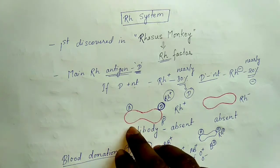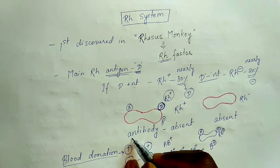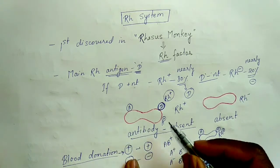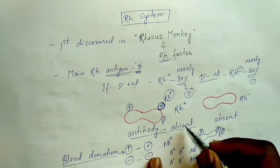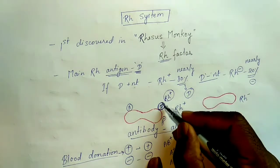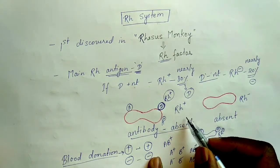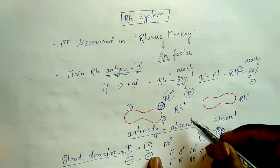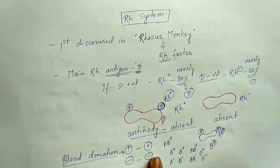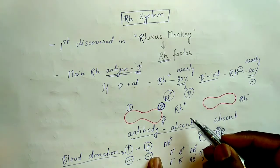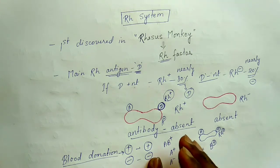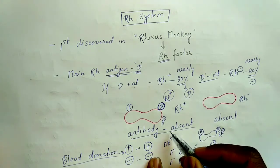In blood donation, Rh positive can only donate to positive and negative can only donate to negative. Regarding antibody in the Rh system, it is not like the ABO system. In Rh, there is no natural antibody against D antigen. But if there is a transfusion of Rh positive blood to an Rh negative person, the Rh negative person's immune system will be induced and will make antibodies against it, but naturally it is not present.